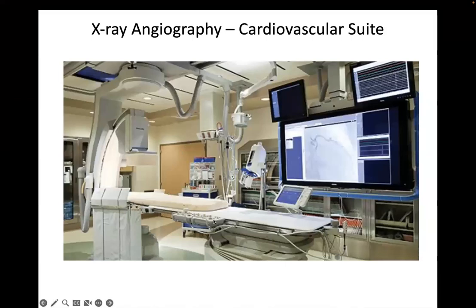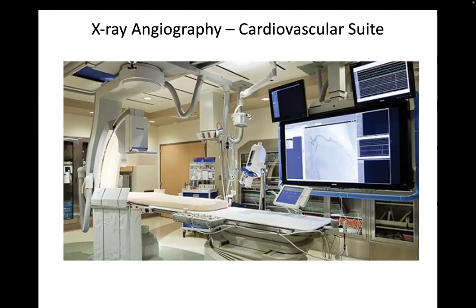This is a fluoroscopy lab. The patient table here — you can control height and position a bit — but most position control is from this large device called a C-arm, because there's a C-shape with a detector and an X-ray source. You can rotate it with multiple degrees of freedom, pan back and forth, pan up and down the table, and rotate the angle of view through the patient. This is the primary imaging modality for cardiac interventions, especially in coronaries and putting in devices like aortic valves, mitral valves, or a device to close off the left atrial appendage.